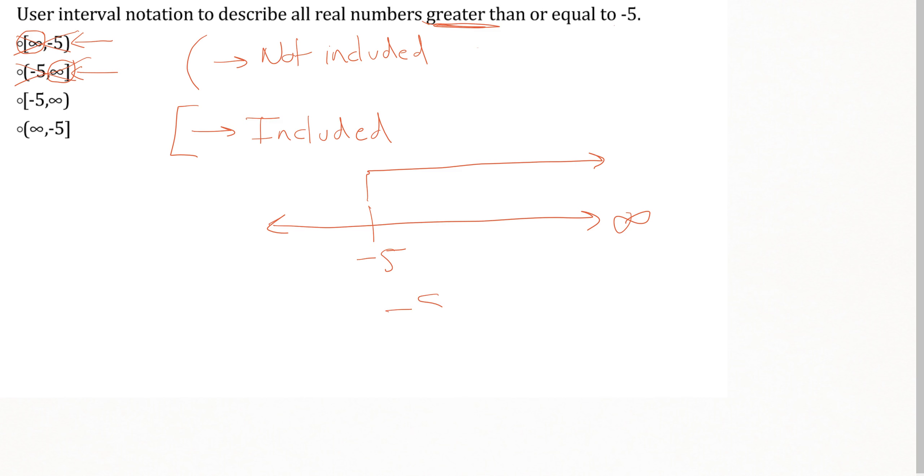So I know that what this is going to look like is negative 5 comma to infinity. We talked about the fact that infinity is never going to have a bracket, so that infinity is going to have a parenthesis on it every time.